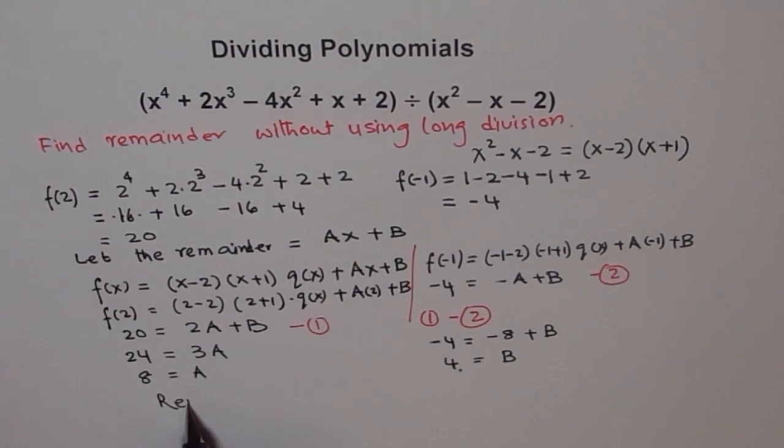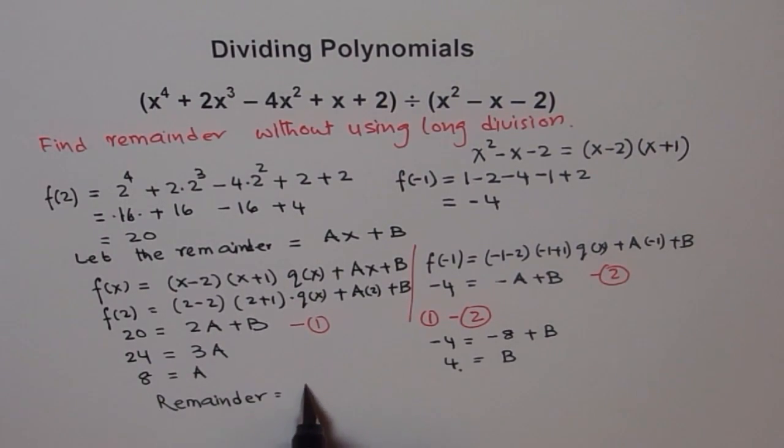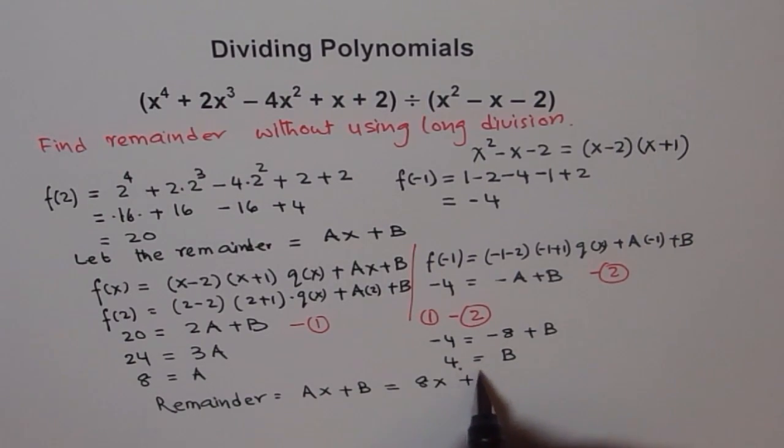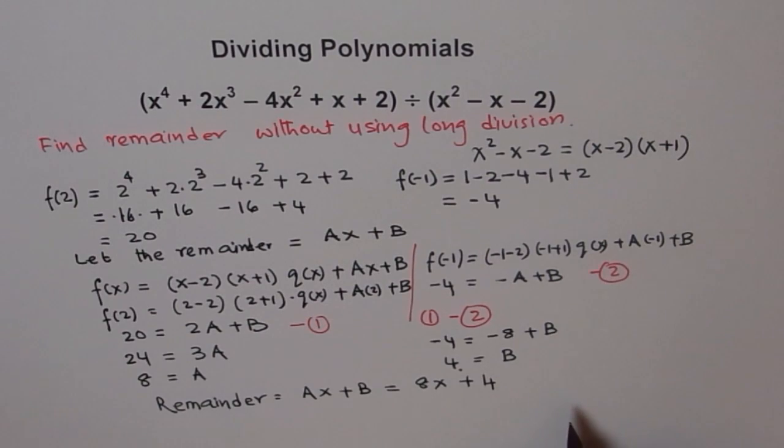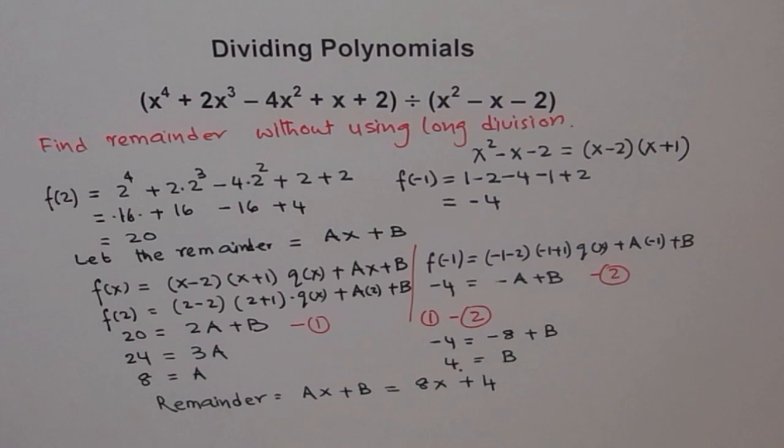Therefore, what is the remainder? Remainder was Ax + B. Now A is 8, so it is 8x + B is 4. So we get a remainder of 8x + 4 and see how beautifully we have used the remainder theorem and the division statement to get our remainder without doing long division.